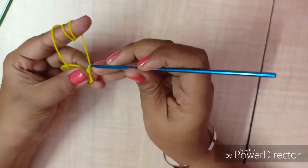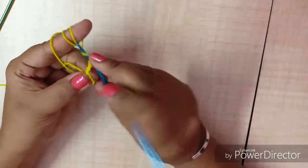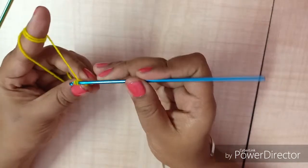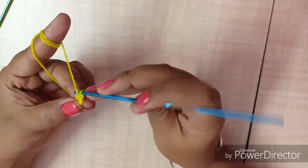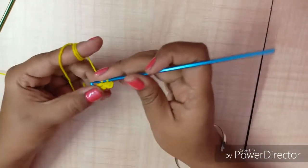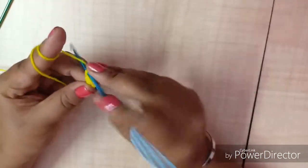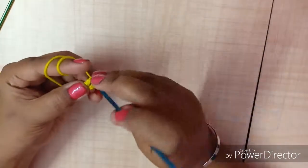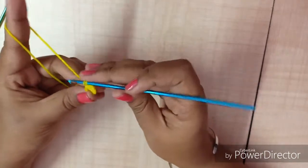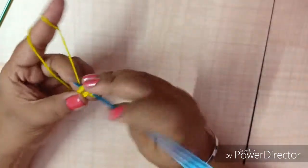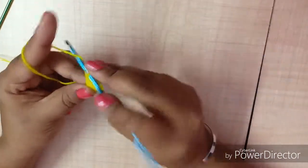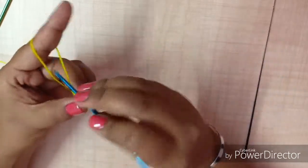Now take another 3 chains. 1, 2, 3 and you have to make double crochet. 1, 2, 3, 4, 5. Total, I made 20 double crochet stitches.